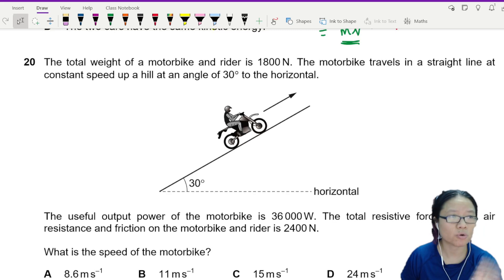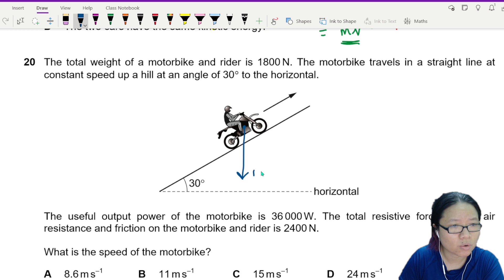In this question, the total weight of a motorbike and a rider is 1800 newton. I'm going to draw the weight, 1800.